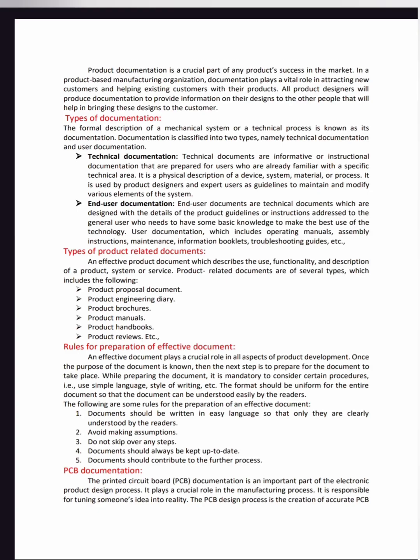There are several types of product-related documents, which include: Product Proposal Document, Engineering Diary, Engineering Drawings and Schematics, Manuals and Handbooks related to Designs and Graphics, Policies and Procedures, Product Specification, Product Reviews, Product Press Releases, Product Instructional Guides, Product-Related Advertisements, Product Catalogues, Product Newsletters, Product-Related Reports, and Product Memos.